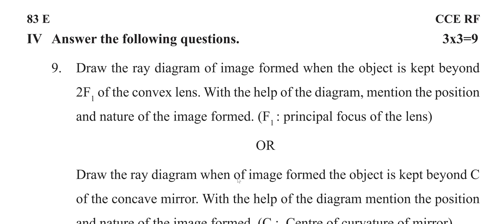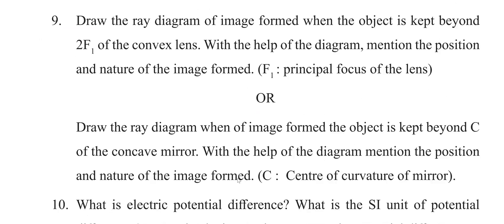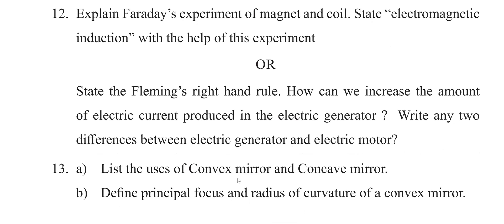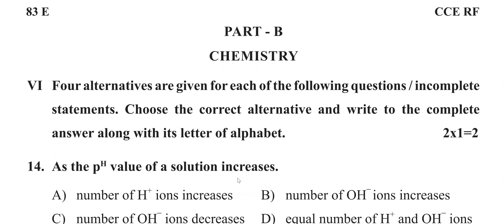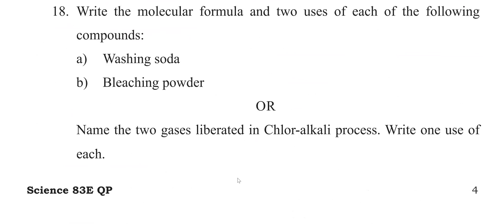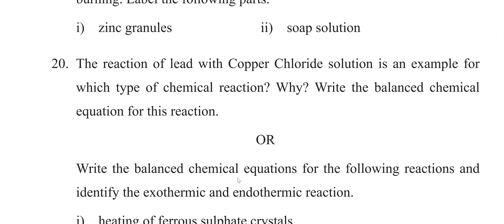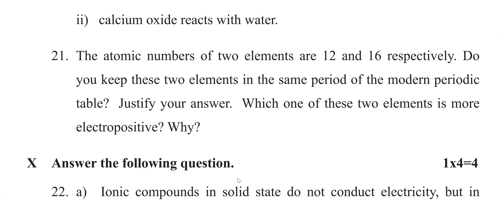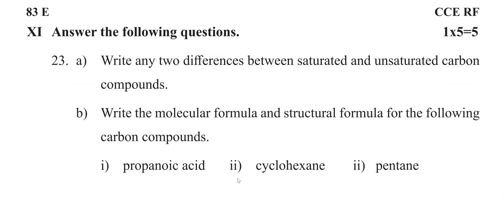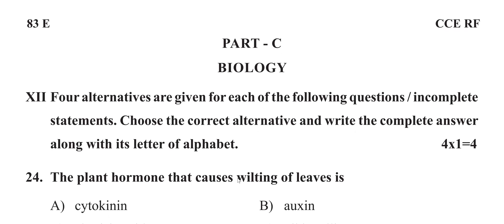Fourth main: three questions, each carries three marks, total nine marks. Fifth main: two questions, each carries four marks, total eight marks. This is Part B, chemistry. And then Part C, biology.